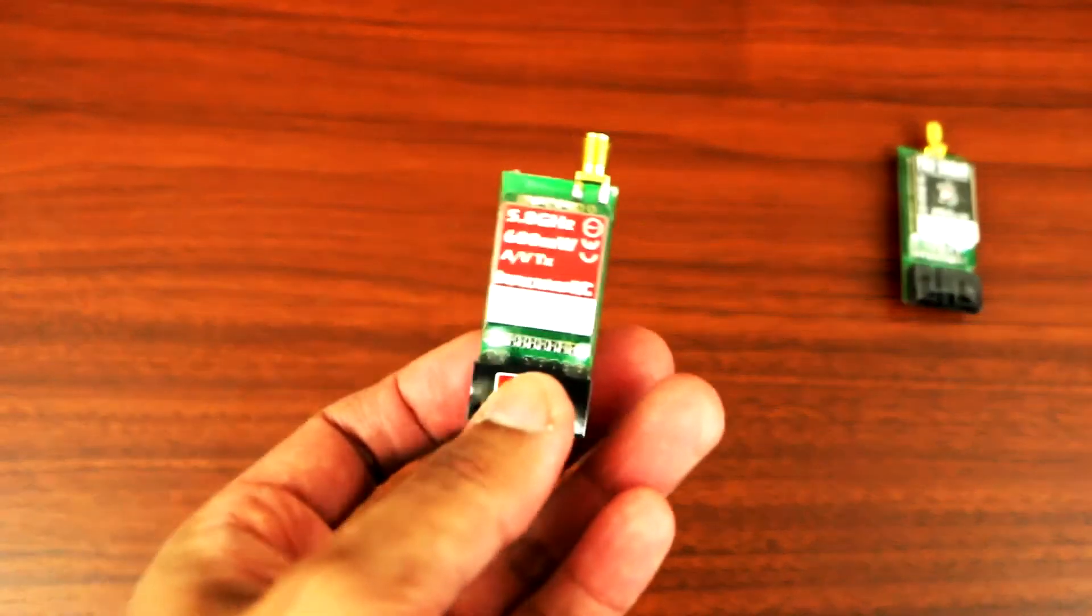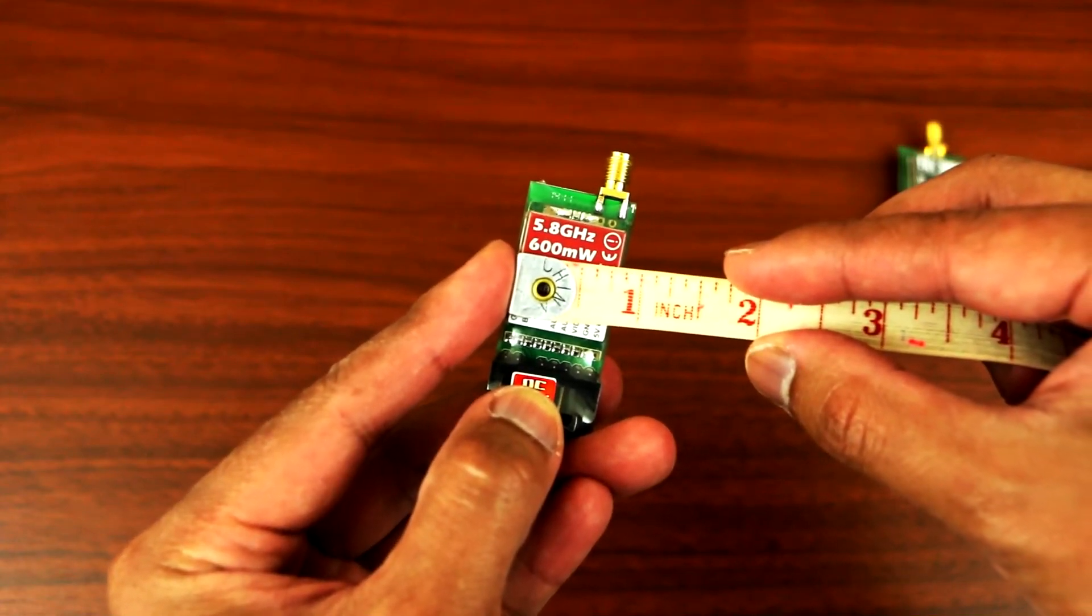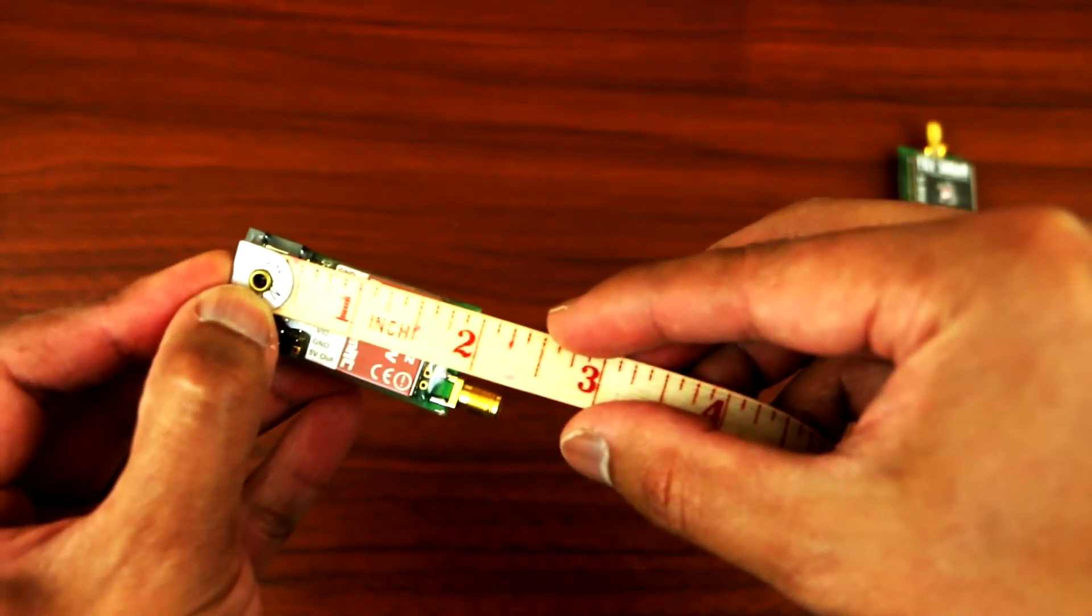For the Emerson, width is less than one inch. Length-wise, less than two and a half inches.